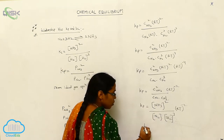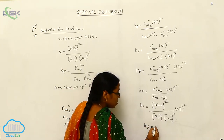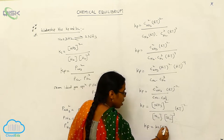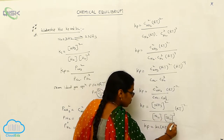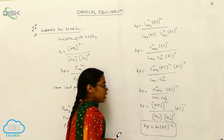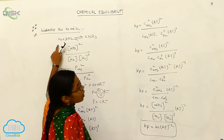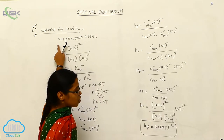Here you can write Kp is equal to Kc·RT to the power of minus 2. It is the relationship for Kp and Kc for Haber's process — ammonia preparation.